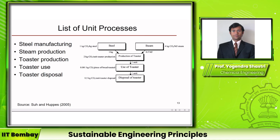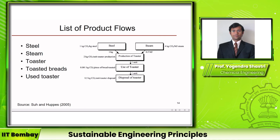The different product flows in this system are: steel, produced by steel manufacturing; steam, produced by steam production; toaster, produced by toaster production; toasted bread, generated during use (not shown explicitly but is a product flow); and the used toaster, which connects the use stage to the disposal stage. These are the five product flows.